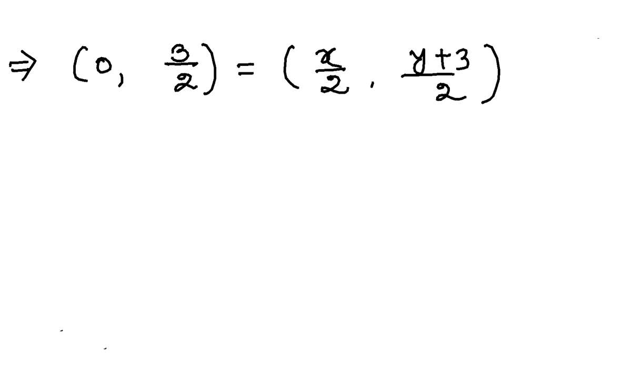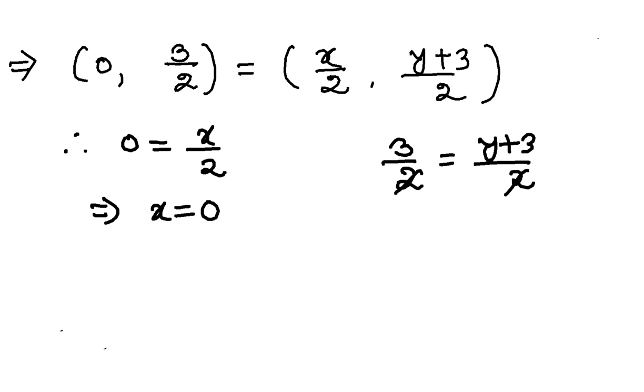This will give us 0 comma 3 by 2 equal to x by 2 comma y plus 3 by 2. So, this is what we have now. Equating x coordinates, 0 is equal to x by 2, which will give you x equal to 0. And 3 by 2 is equal to y plus 3 by 2, so 2 and 2 cancelled, I have y plus 3 equal to 3. From here, y is also 0.